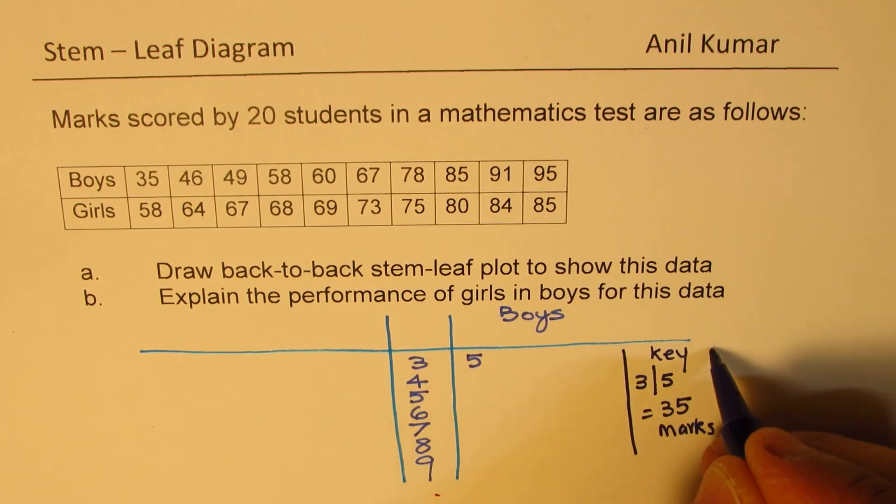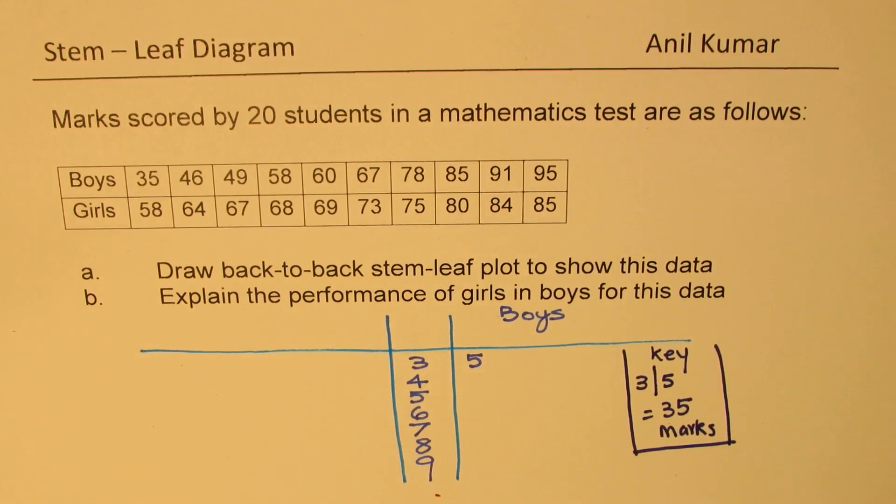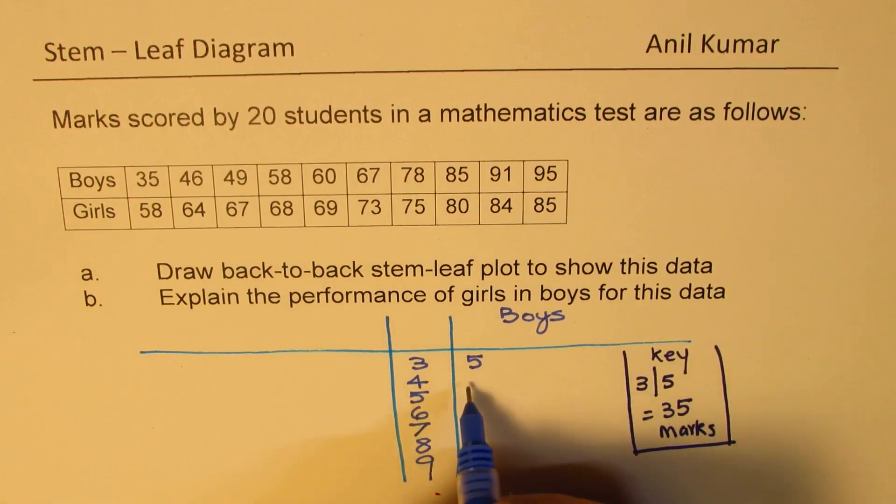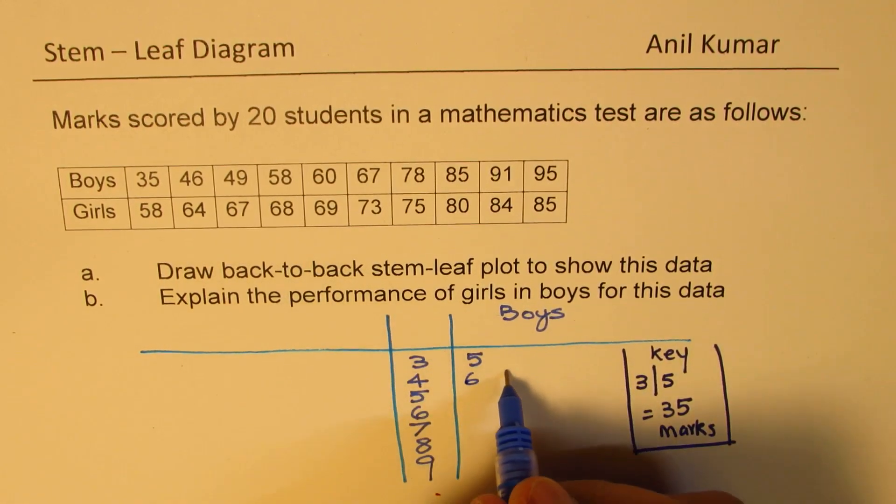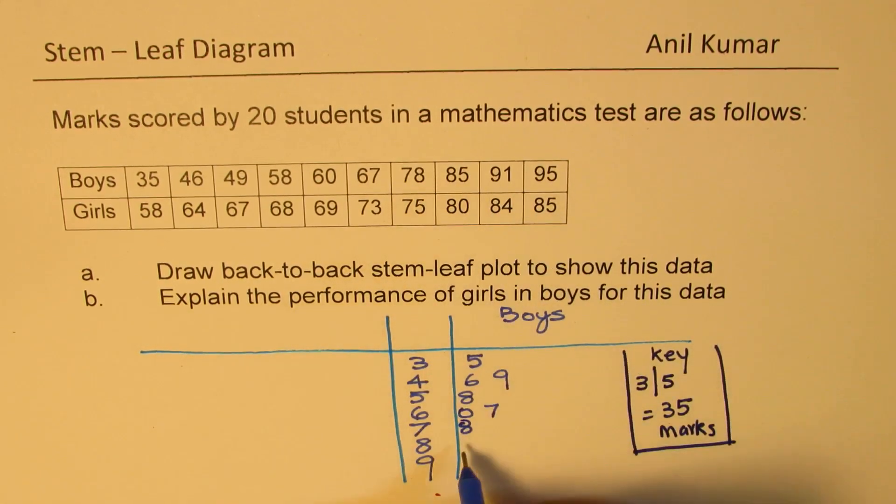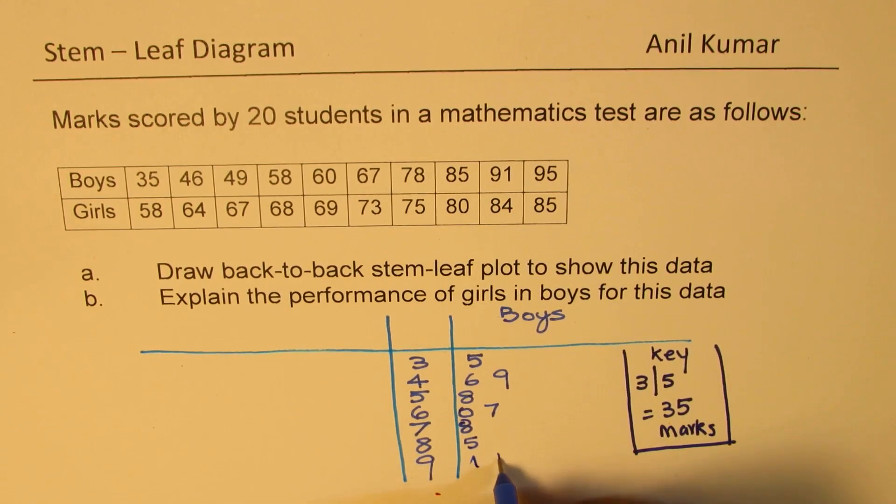46, so we'll put 6 here, then 49, 9, 58, 5 and 8, 60, 6, 0, 67, 67, 78, 7 and 8, 85, 8 and 5, 91, and 95. So that becomes the data for the boys.